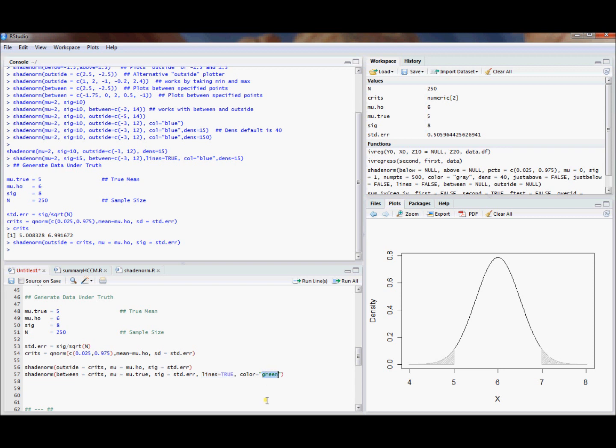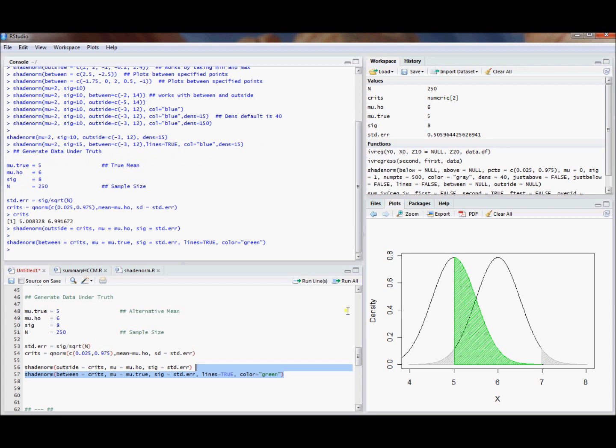We're going to shade under this alternative distribution with the color green. Instead of doing outside where we reject, we'll do between where we failed to reject. So we'll be plotting the probability that we failed to reject given that the alternative is true. There's the alternative distribution centered right here at 5. That's mu true, mu alternative. We shaded this area of failing to reject the null hypothesis when the alternative is true.